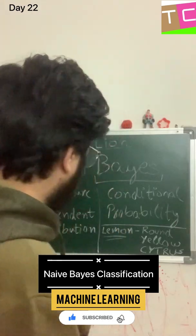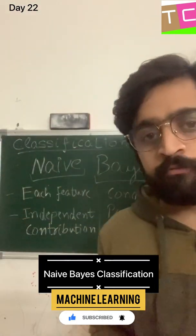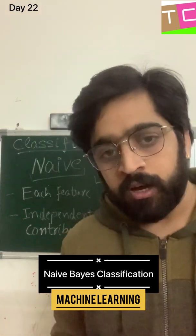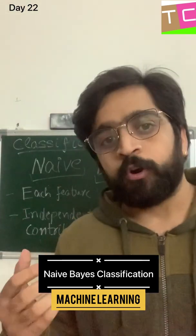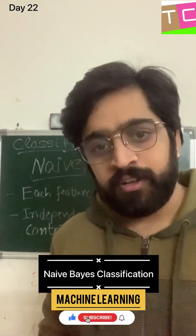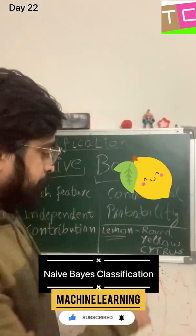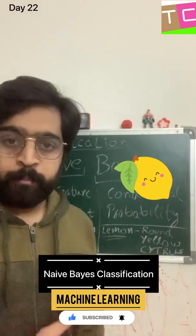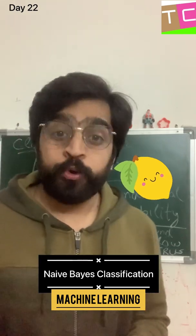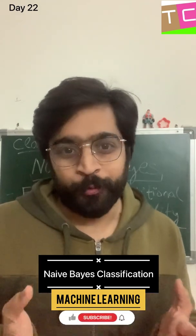The second term is naive. If we have multiple features of an object or a row, and each feature is contributing to the probability separately, independent of each other, these are called naive features. For example, a lemon can be round, it can be yellow, and it is citrus — these three features together conclude that it is a lemon, not a sun or a moon.